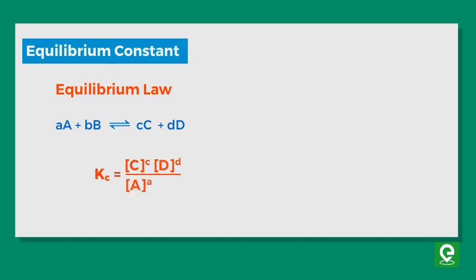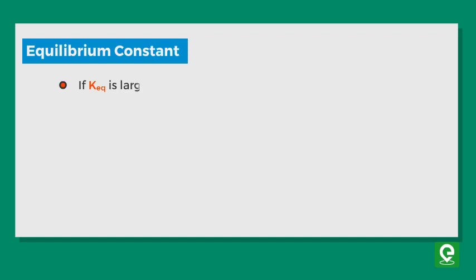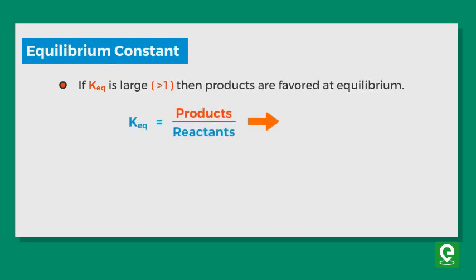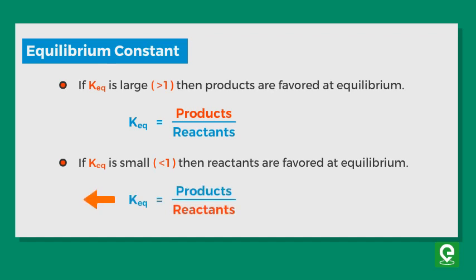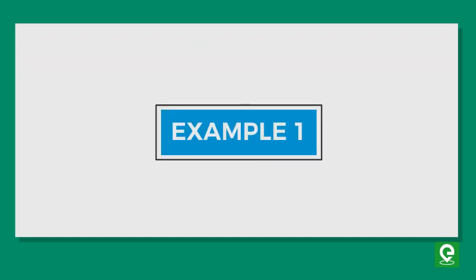If K is greater than 1, then creation of product is favored and reaction moves in forward direction. If K is less than 1, then creation of reactants is favored and reaction proceeds in backward direction.